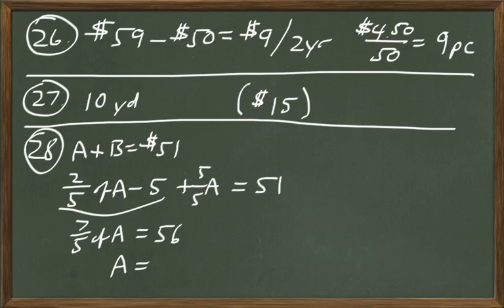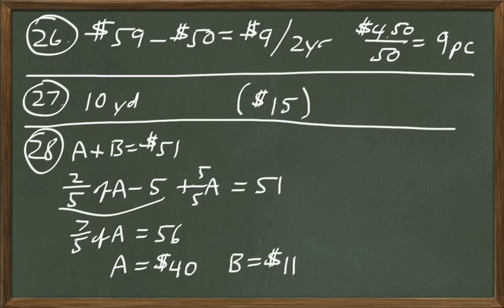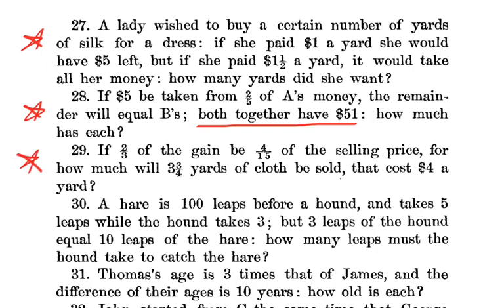Seven-fifths of A's money equals $56, so one-fifth of A is $8, and five-fifths — all of it — is $40. A has $40. That means B has $11, since both must add up to $51. We can verify: one-fifth of A is $8, two-fifths is $16, and $16 minus $5 equals $11. That checks out. The answer to number 28: A has $40 and B has $11.